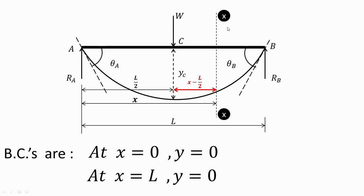Now we have to calculate the moment at section XX, and therefore we must know the perpendicular distance between W and section XX. Consider section XX at a distance x. x minus L/2 will be the perpendicular distance, because this total distance is x, and subtracting L/2 gives the distance x minus L/2. So deflection at point C will be yc.